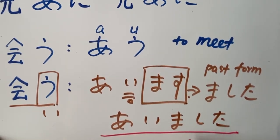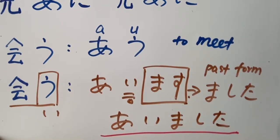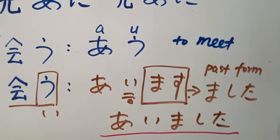Aimashita. You change masu to mashita. Ne. Ii desu ka. Alright. So let's look at the sentences.